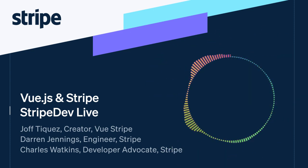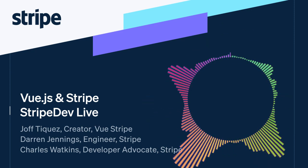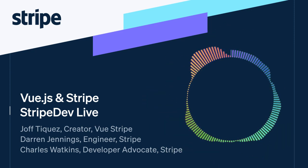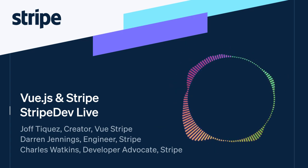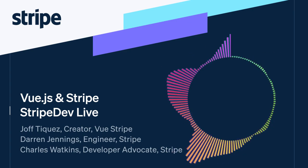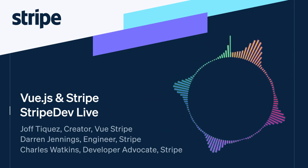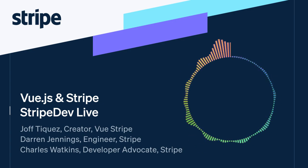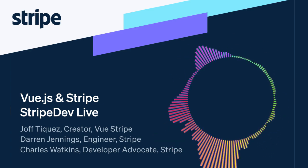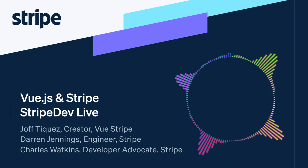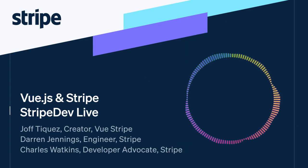Hey, hello. I hope everyone can hear me. Thanks for the introduction and for inviting me here to Stripe Live Q&A. My name is Joff. I'm from Manila. I'm the creator of Vue Stripe, and I'm currently working as the tech lead and head of front-end development for MyCure, a startup company here in Manila. I like open source and have a bunch of JavaScript and Vue.js projects on my GitHub. For my hobbies, I do rock climbing and cycling.